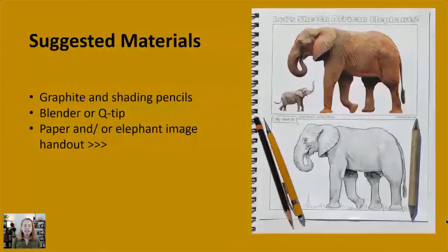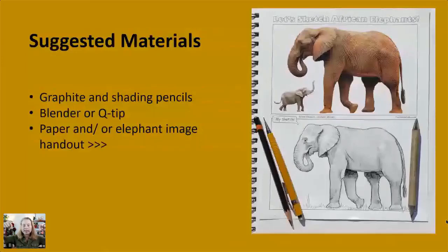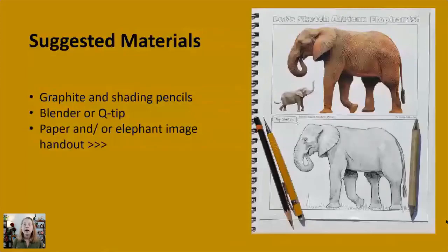Our suggested materials are whatever you have on hand, whatever is your favorite thing. I'm going to be using a graphite pencil, a shading pencil, and a little blending stomp — or you could use a Q-tip — and also a piece of paper or the elephant image available at the link below where it says 'download resources here.' I suggest you download and print those beforehand, but if you haven't done so already, that's okay. I'll have some nice big photos with the step-by-step that you can follow along to.